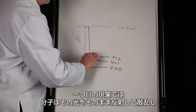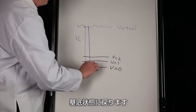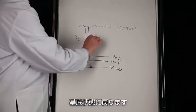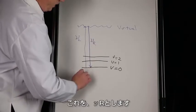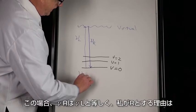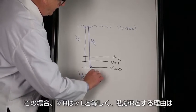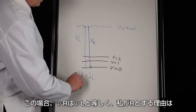Now once it's there, one of two things can happen. The first thing is it can scatter that light right back and go right back to the ground state. This is going to be νR.